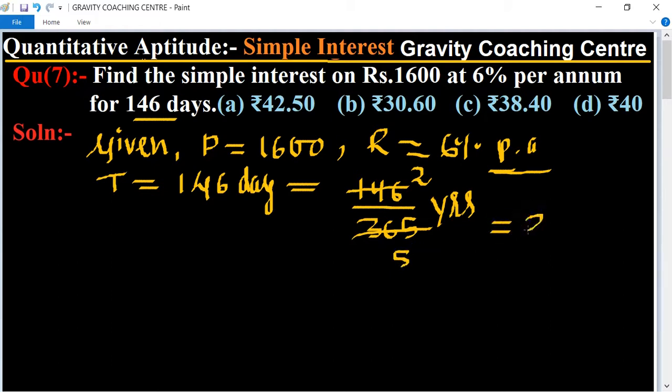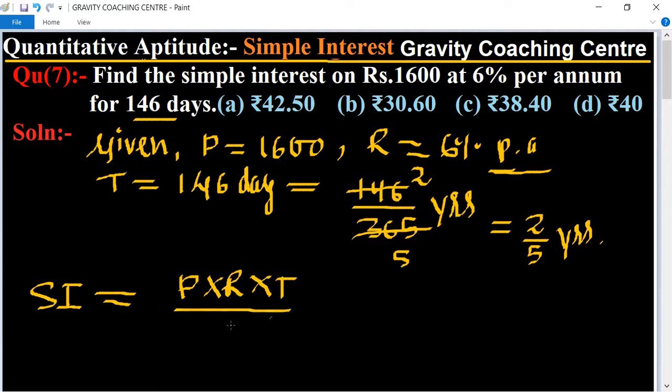Its formula is principal into rate of interest and time upon hundred. Here P equal to 1600 rupees, and rate of interest is 6 upon 100.